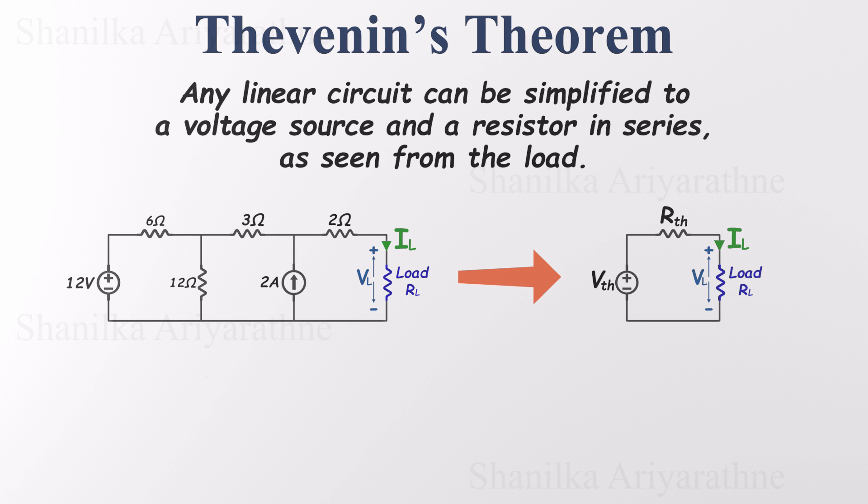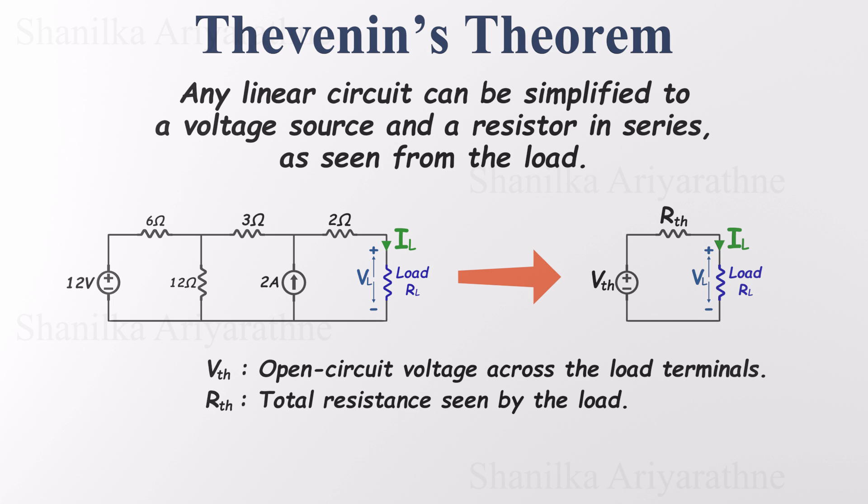Using the Thevenin equivalent, we can simplify any complex circuit. In this model, VTH is the Thevenin voltage, the open circuit voltage across the load terminals. RTH is the Thevenin resistance, representing the total resistance seen by the load, and RL is the load resistance, the one we're trying to power.